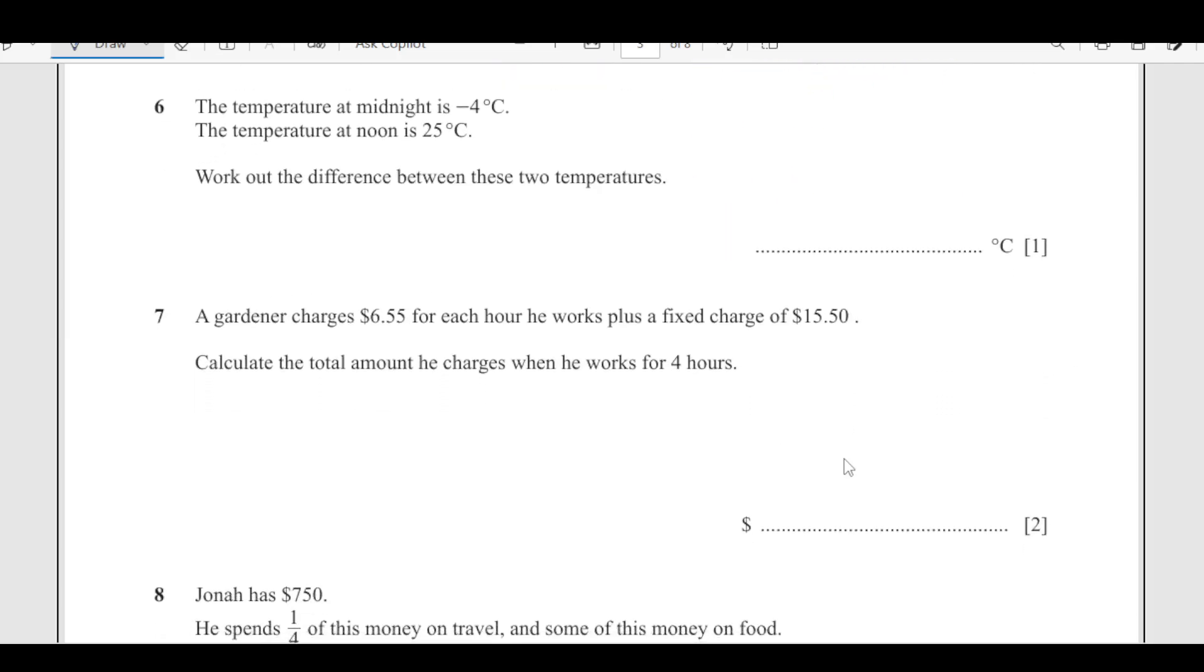Number 6, the temperature at midnight is negative 4, the temperature at noon is 25 degrees Celsius. Work out the difference between these two temperatures. 25 is on positive side and negative 4 on other side. We are looking for this difference, so we have to add, 25 plus 4 is 29 degrees.